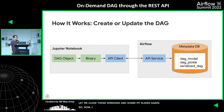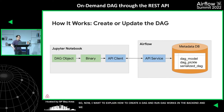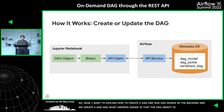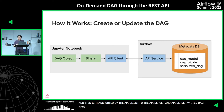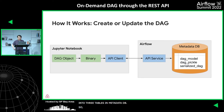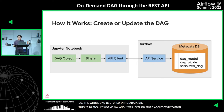Now I want to explain how create DAG and run DAG work in the backend. When we create the DAG, the DAG object is serialized into a binary blob, and this binary blob is transported by the API client to the API server. The API server writes the DAG into three tables in the metadata database. That's the data model — the serialized DAG is stored in the metadata DB. I'll explain more about the serialization and API changes in the technical detail section.